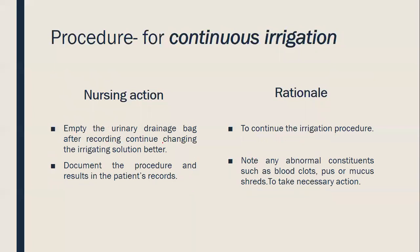Empty the urine drainage bag after recording output, and continue changing the irrigating solution bag as needed to continue the irrigation procedure. Document the procedure results in the patient's chart — record what kind of solution was used, whether the patient was cooperative, and any forms of discomfort during the procedure. Also document the amount of urine removed or cleaned out after the procedure to identify any retention of urine.